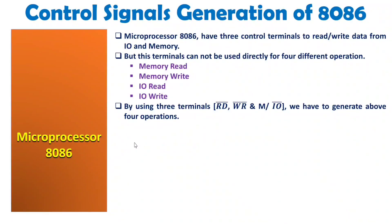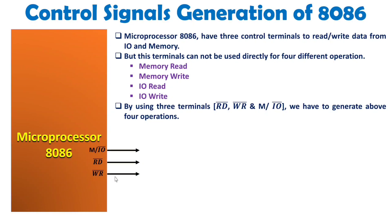Let us understand how these terminals function in 8086. The Memory/IO bar terminal explains memory and IO operation. If this terminal is logic 1, there will be a memory operation. If it is logic 0, there will be an IO operation. For Read bar, if this terminal is logic 0, Microprocessor 8086 will read data. For Write bar, if it is logic 0, the microprocessor will write data.